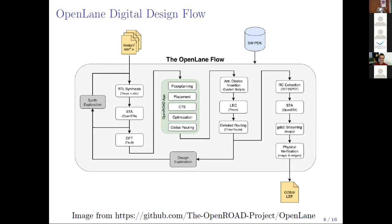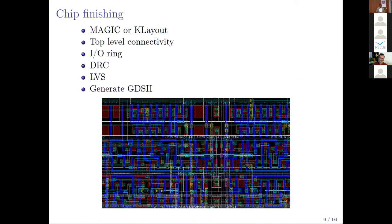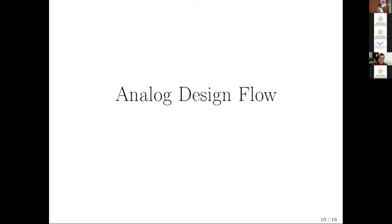This could be fixed by manually changing the pipeline, but it takes too much design effort, and if you change technology you need to do it all over again. Another very problematic part of this flow is RC extraction, because it is a Python script, so capacity and accuracy are debatable. After that, you finish the chip with KLayout — you do the top-level connectivity, place the IO ring, check DRC and LVS, and of course generate the layout.